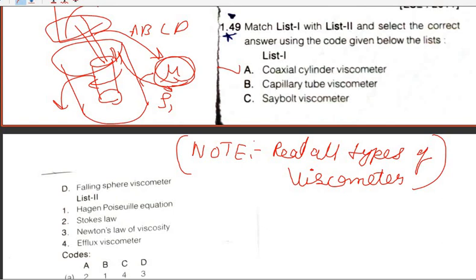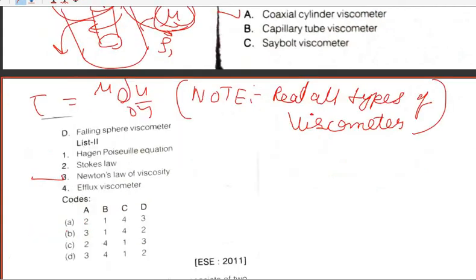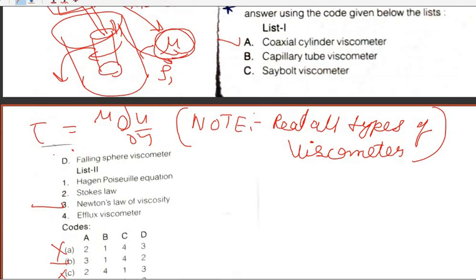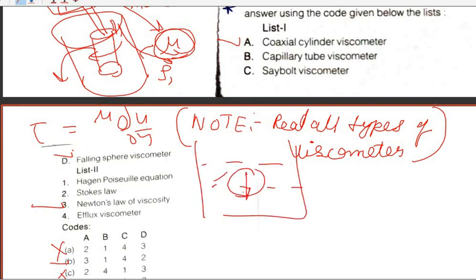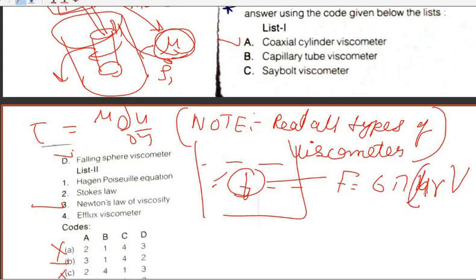The phenomenon used in the cylinder viscometer is Newton's law: du/dy relates to shear stress. For the falling sphere (Stokes) viscometer, the drag force equals 6π × mu × r × v (Stokes' law), and from this viscosity can be determined. So B matches with Stokes' law.